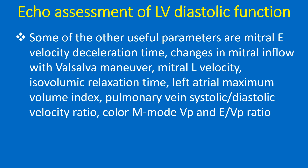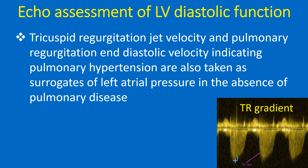Some of the other useful parameters are Mitral E-velocity deceleration time, changes in mitral inflow with Valsalva maneuver, Mitral L-velocity, isovolumic relaxation time, left atrial maximum volume index, pulmonary vein systolic-by-diastolic velocity ratio, Mitral Color M-mode Vp and E-by-Vp ratio. Tricuspid regurgitation jet velocity and pulmonary regurgitation end-diastolic velocity, indicating pulmonary hypertension, are also taken as surrogates of left atrial pressure in the absence of pulmonary disease.